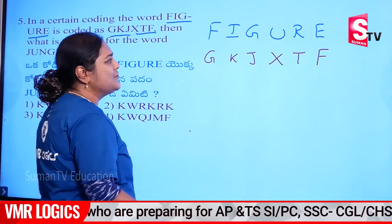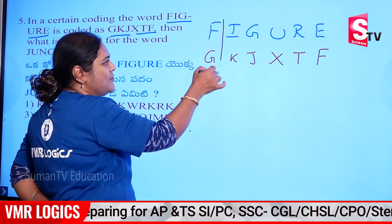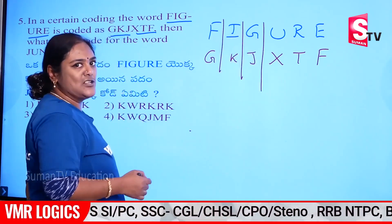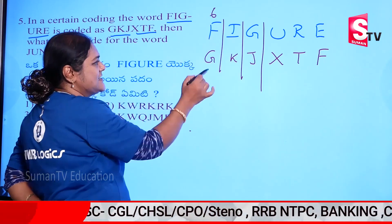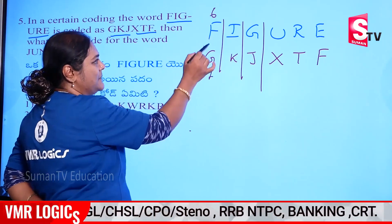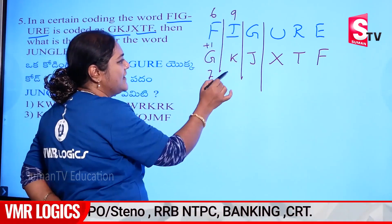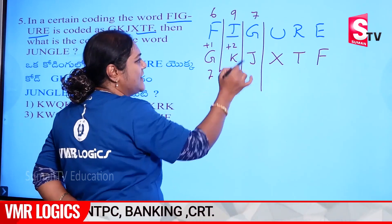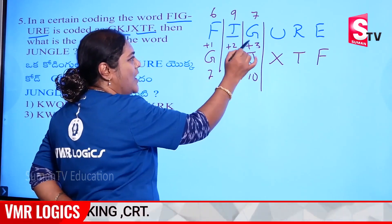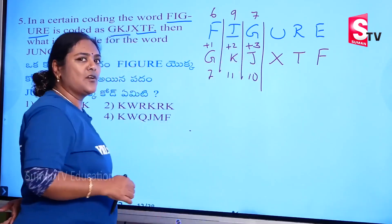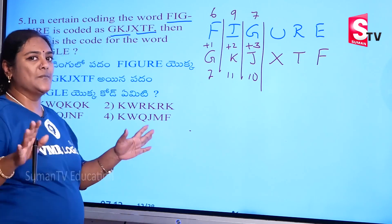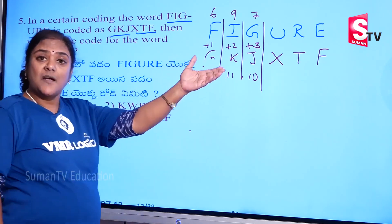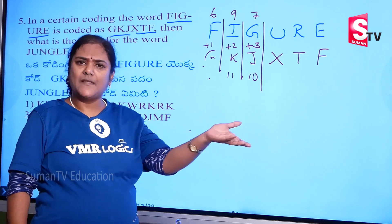Now, if we have opposites, we have to do it. Place values — we have to do it. 6 and 7 plus 1, 9 and 11 plus 2, 7 and 10 plus 3. Now I have to do the logic. 3 letters to code values: plus 1, plus 2, plus 3.